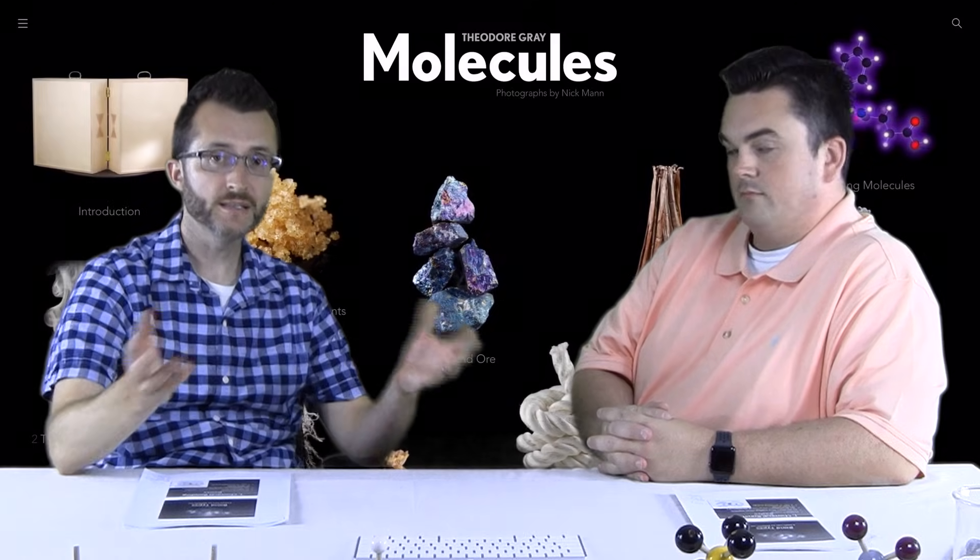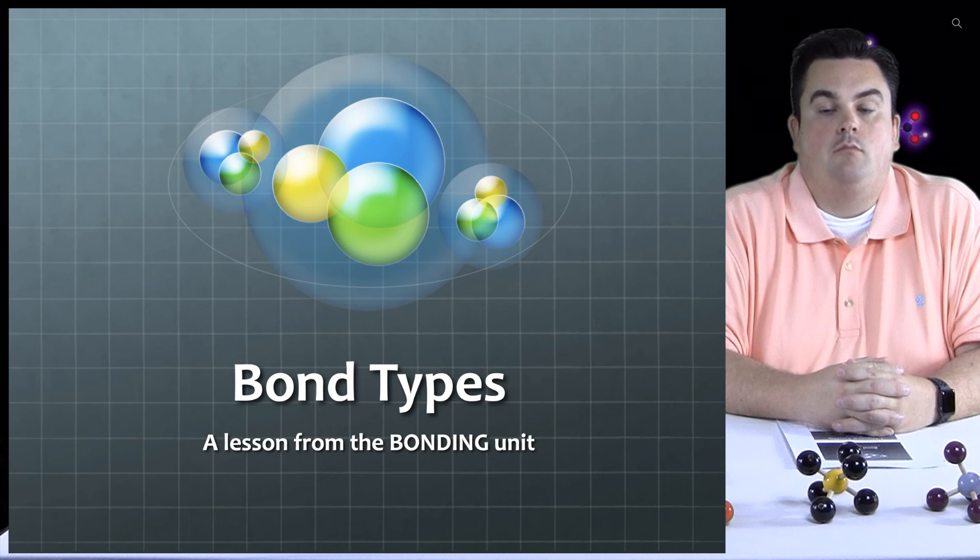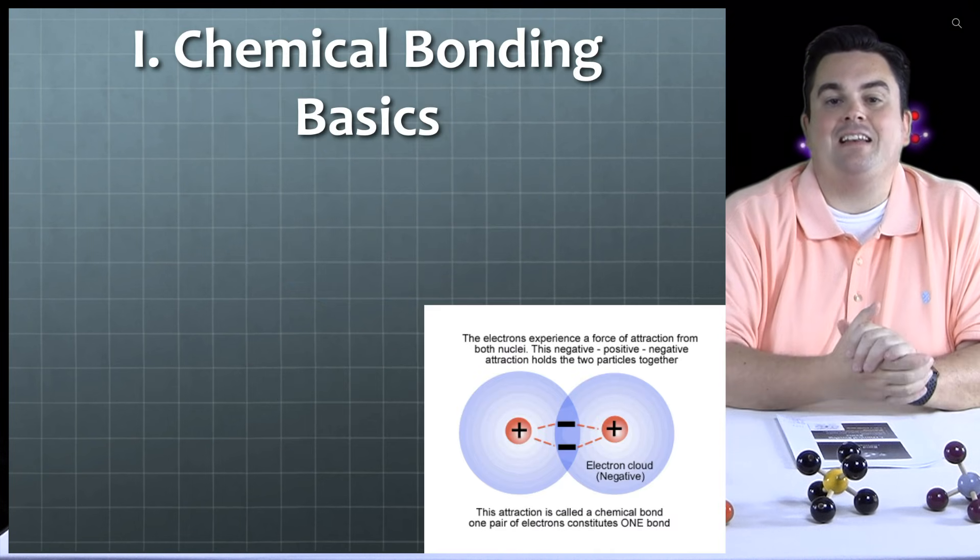What up nerds? So today we're going to talk about the three bond types. Yeah, there's only three. Ionic, covalent, and metallic. So let's get started. Bond types, a lesson from the bonding unit. Chemical bonding basics.